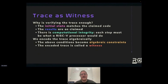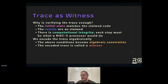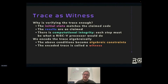Verifying the trace would be sufficient because we know the initial state, the results match, and there's computational integrity — every step is what an actual physical RISC-V circuit would have done. We encode this using algebra: those conditions become algebraic constraints. The binary zeros and ones are turned into field elements, and that encoded trace is called a witness to the algebraic constraints — it satisfies every single one of them.